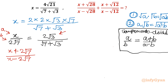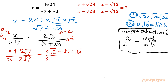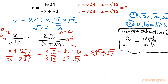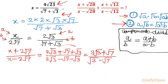Now simplifying the RHS: the numerator is 2√3 + √7 + √3 = 3√3 + √7, and the denominator is 2√3 − √7 − √3 = √3 − √7. So we get (x + 2√7)/(x − 2√7) = (3√3 + √7)/(√3 − √7). I have used property 1 to split √21 into its product form.